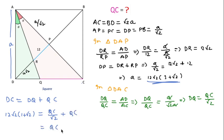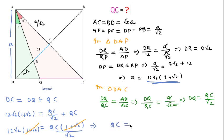We have 12√2·(1 + √2) = QC/√2 + QC. Factoring QC: 12√2·(1 + √2) = QC·(1/√2 + 1). The (1 + √2) terms cancel, so QC = 12√2 × √2 = 24 units. So 24 units is the right answer for this question. Thanks for watching this video — please like, share, and subscribe to this channel.